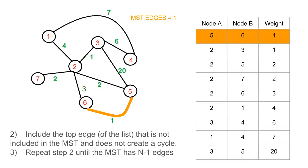We're gonna have one edge in our MST, so we have the counter as you can see, MST edges equals to one. Then we're going to include the second edge since it's the next edge and it does not create a cycle. We're going to do the same for the third one, for the fourth one.